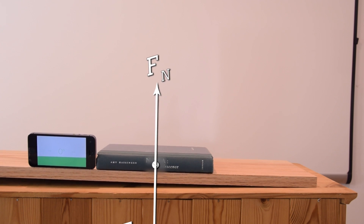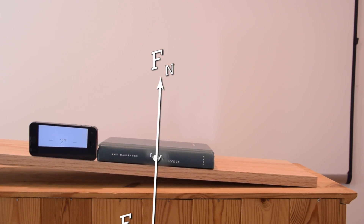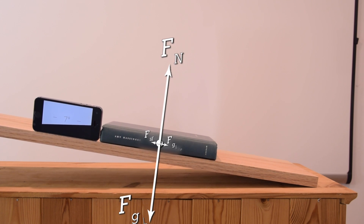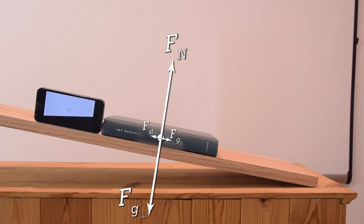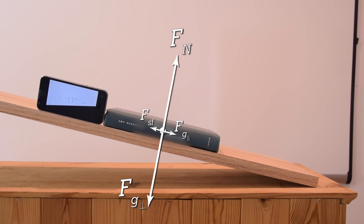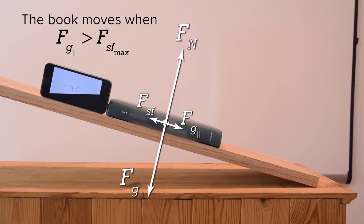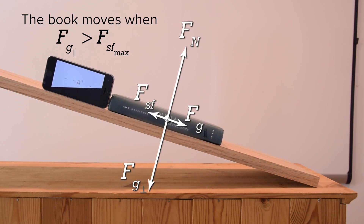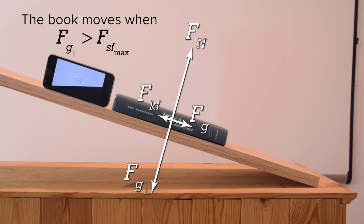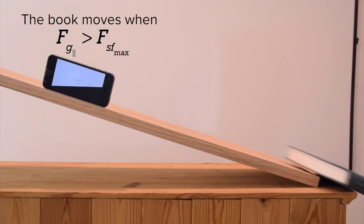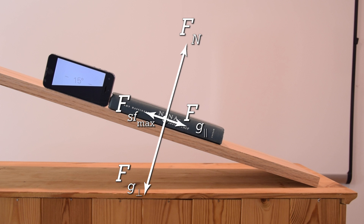Notice as the incline angle increases, the force of gravity down the incline — the force of gravity parallel — increases. Therefore, the force of static friction, which adjusts in magnitude to keep the book from sliding, also increases. The force of static friction continues to increase until the magnitude of the force of gravity parallel is just barely above the maximum force of static friction, at which point friction switches from static to kinetic, decreases in value, and the book begins to accelerate down the incline. We use the maximum force of static friction because it is at its maximum value when the incline is at 15 degrees.